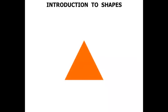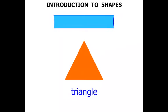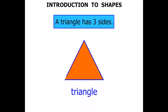Now what about this shape? This is a Triangle. A Triangle has three sides. One. Two. Three.